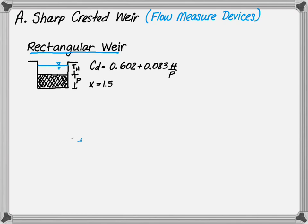The coefficient of discharge CD is equal to 0.602 plus 0.083 times H divided by P, where H is the height above the weir and P is the height of the weir itself, where X, the coefficient, is 1.5 for a rectangular weir.